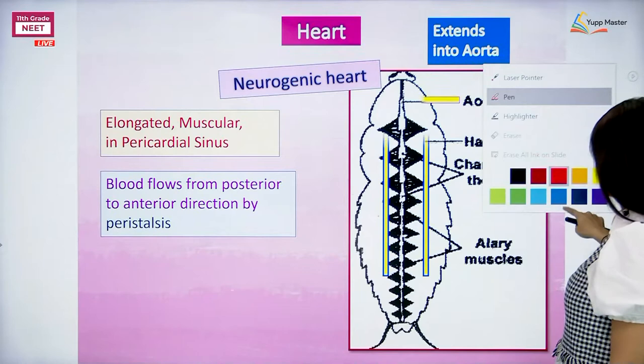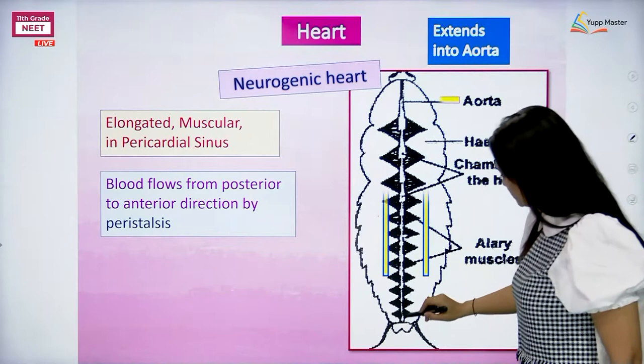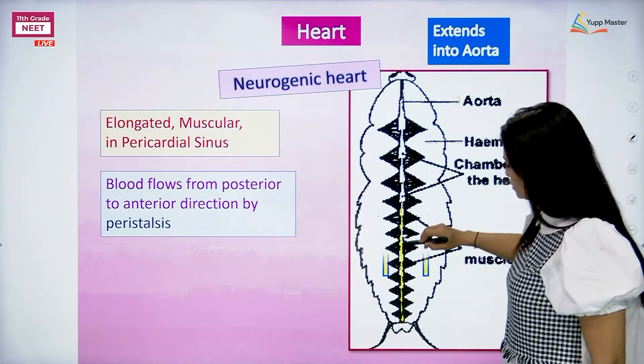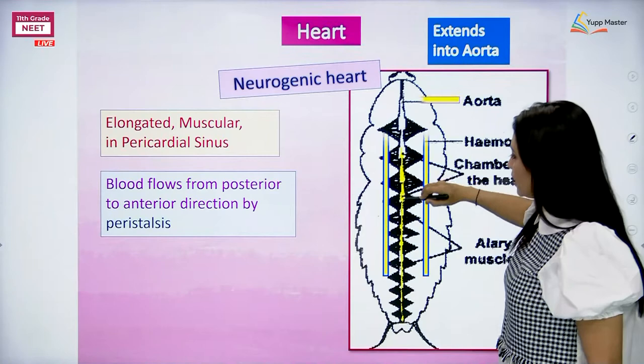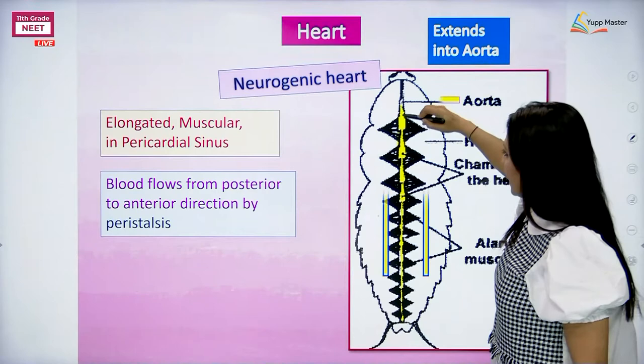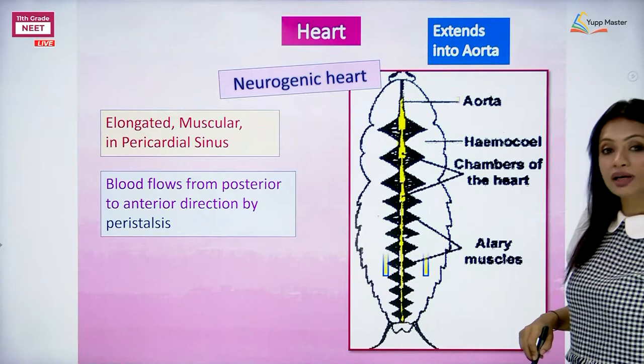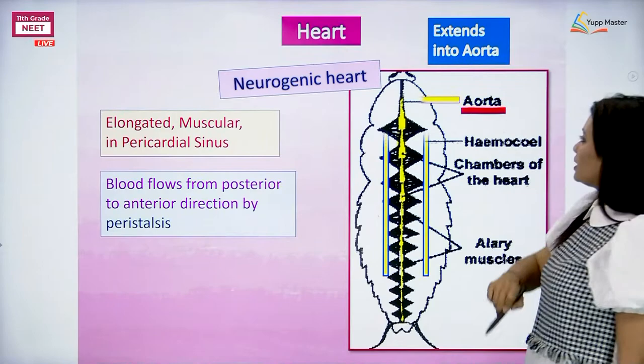Blood is going to be flowing. The blood is white in color. When talking about that part, it is flowing right from the posterior end all the way up. When blood flows with the help of peristaltic movements, blood flows upwards and ultimately enters into a region called the aorta.